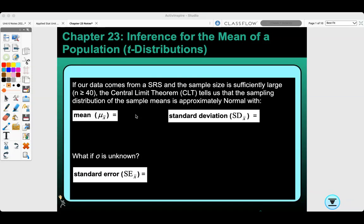Today we're going to do Chapter 23, Inference for the Mean of a Population, T Distributions. If our data comes from a simple random sample and the sample size is sufficiently large and greater than or equal to 40, the central limit theorem tells us that our sampling distribution of the sample means is approximately normal with mean mu, that's our population mean, and standard deviation sigma over the square root of n, where sigma is the standard deviation of the population.